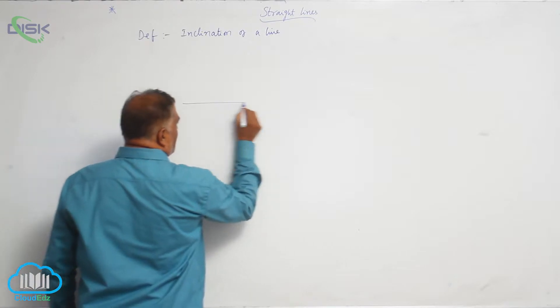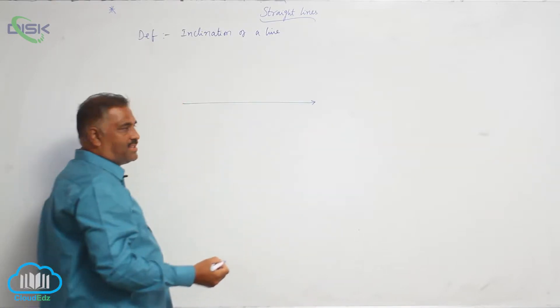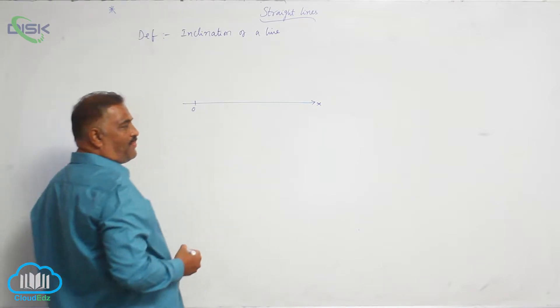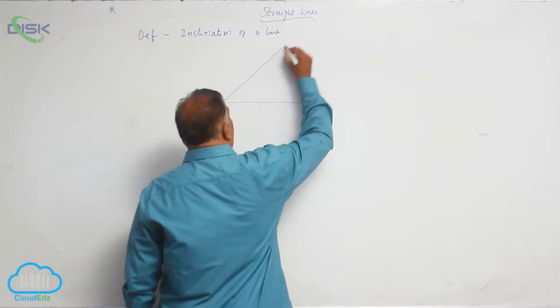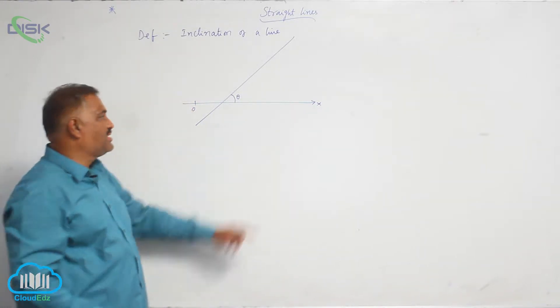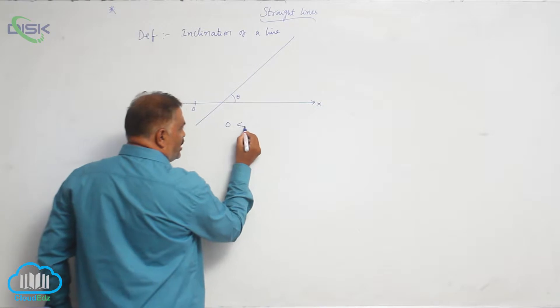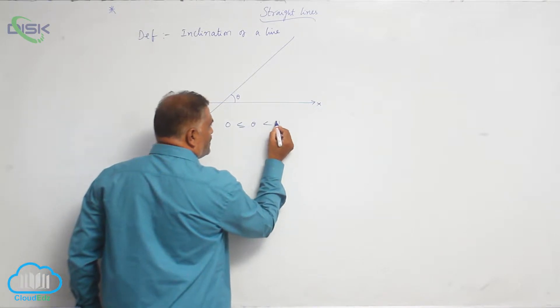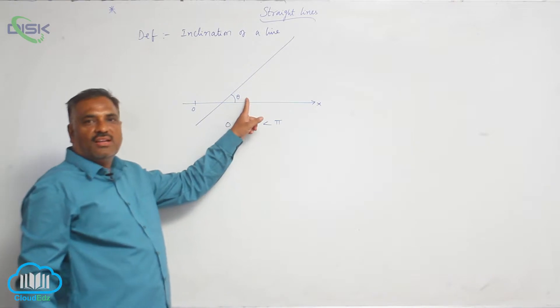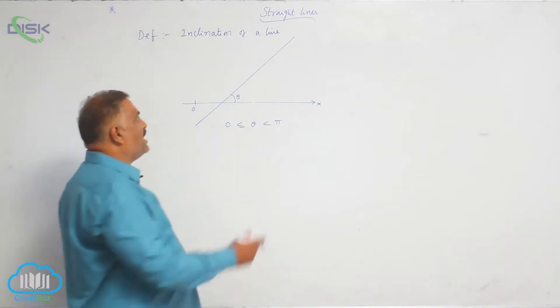Now let us consider this is positive x-axis. Now this is of course origin. If any straight line makes an angle theta with positive x-axis such that 0 less than or equals to theta less than pi, then theta is called inclination of the line L.